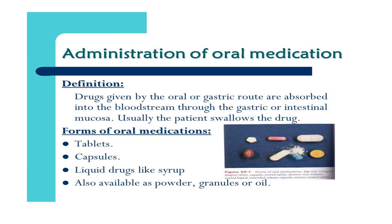Different forms of oral administration include tablets — such as paracetamol for fever — capsules, which are soft slimy structures like vitamin tablets, syrups such as cough syrups, and also drugs in the form of powder, granules, or oils. Powder forms include ORS — oral rehydration solution — used for diarrhea, mixed with water before administration.